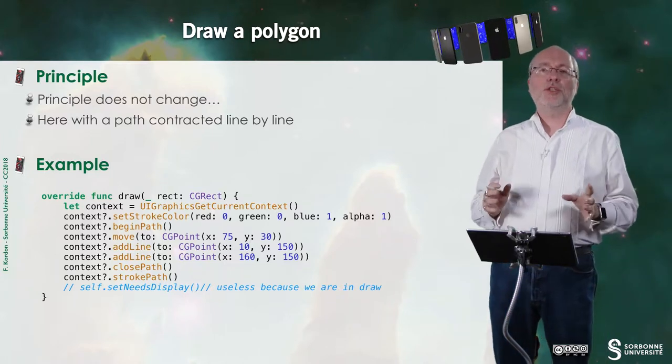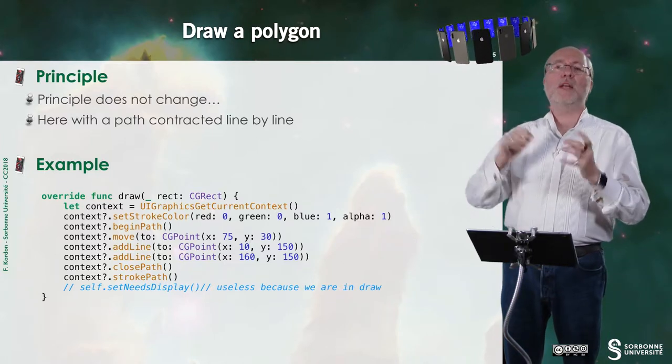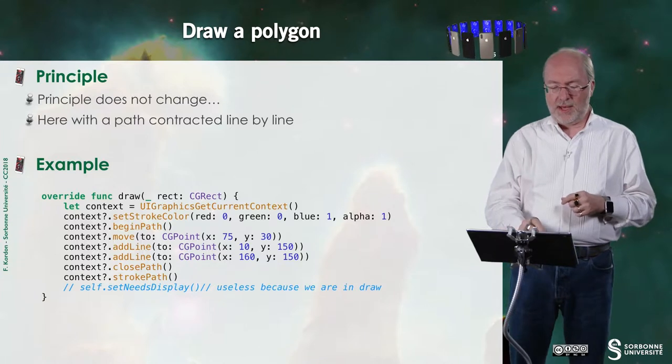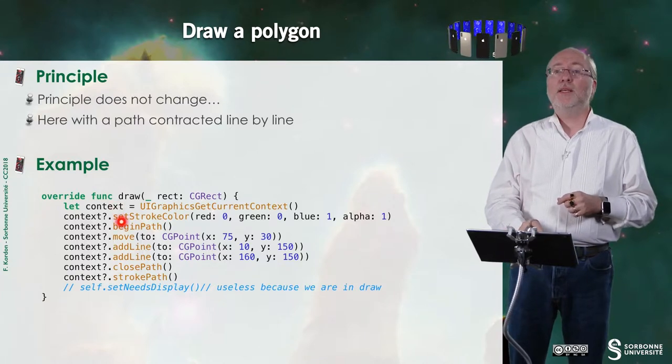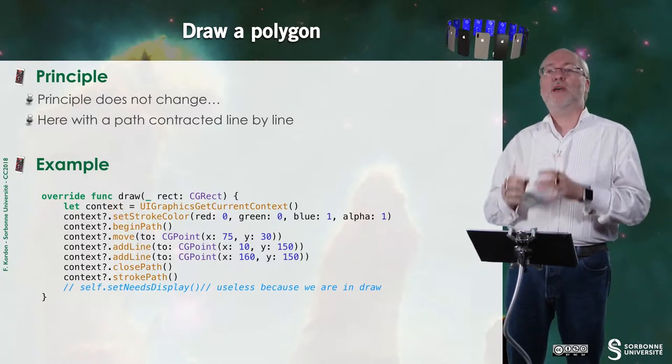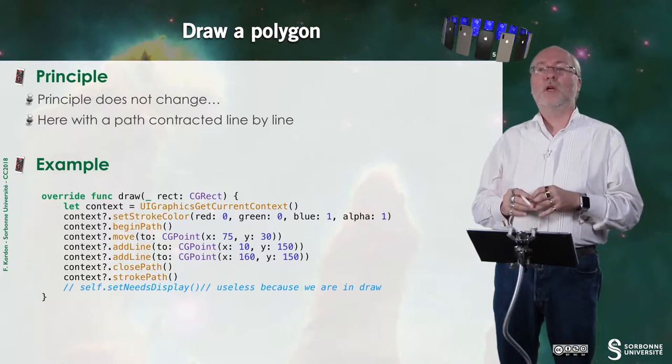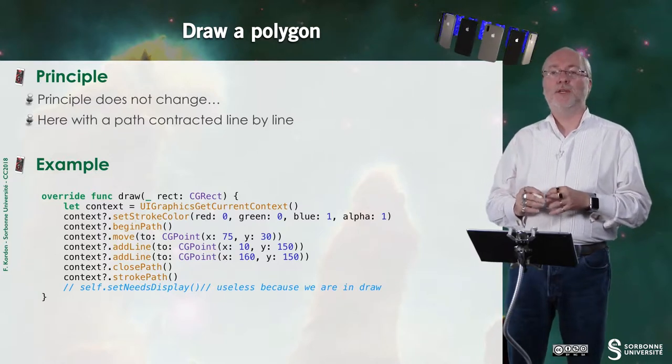More generally speaking, you can draw a polygon. The principle does not change, but here you draw the polygon line by line. So here I fetch the context. Here I have fun. I set the color. I change the color to be blue only.